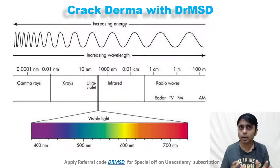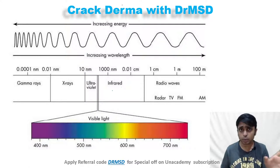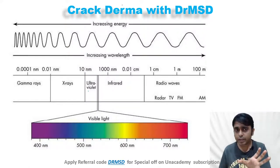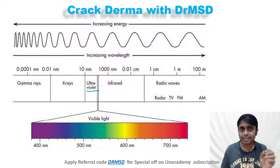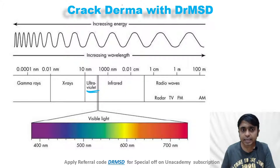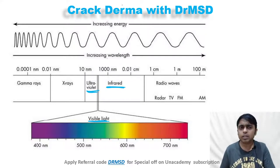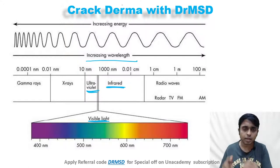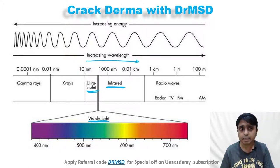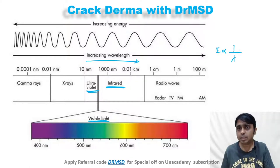This is from your physics knowledge — I hope all of you remember this. Ultraviolet rays are present before visible light, and after visible light there is infrared radiation. As the rays move from ultraviolet to visible to infrared, the wavelength is increasing whereas the energy is decreasing. Energy is inversely proportional to the wavelength.